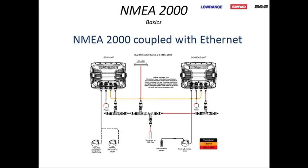A common question is why units can't talk to each other — the answer is usually that they haven't been coupled into the NEMA 2000 network. Your units have to be networked into a backbone system, using NEMA 2000 with Ethernet — the Ethernet handles your side and down imaging. Once this system is in place, adding a new unit is simple: remove the terminator from one end, add a T-connector, plug in the new unit, replace the terminator. This applies to Gen 1, 2, and 3 Lowrance units.